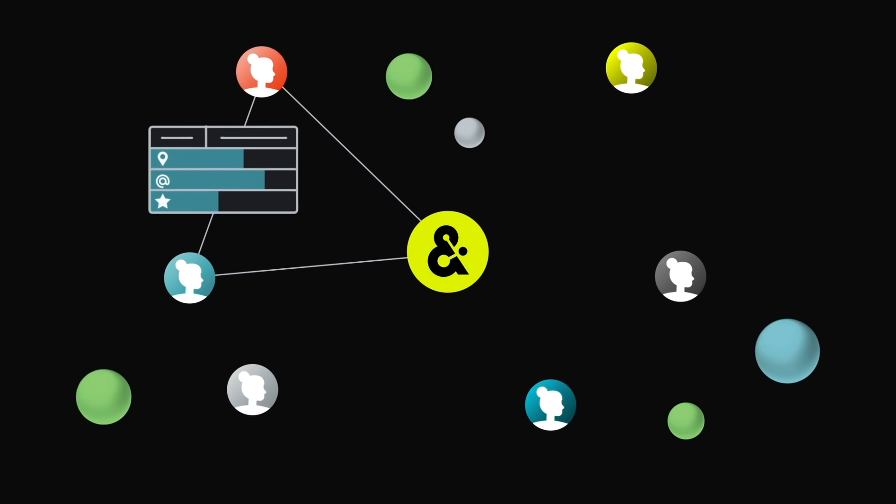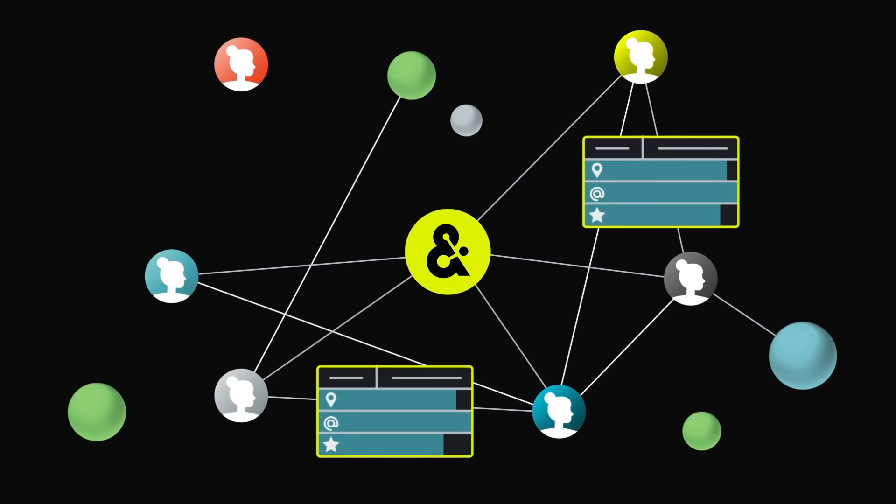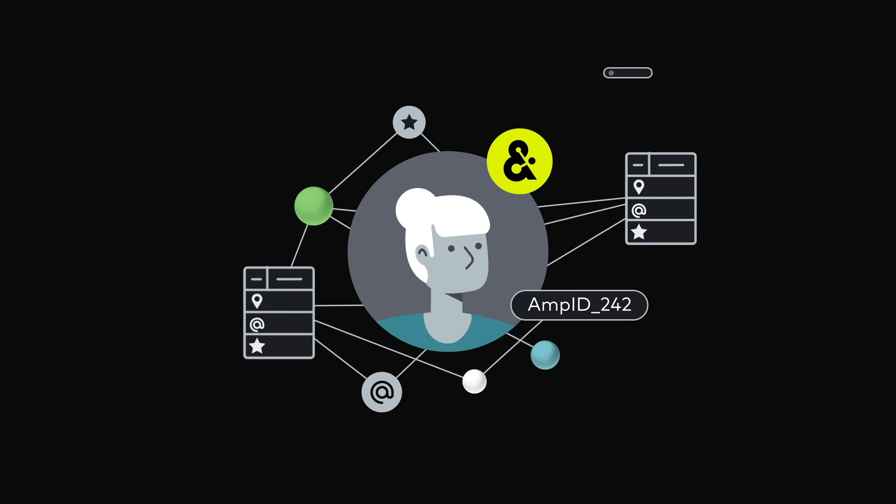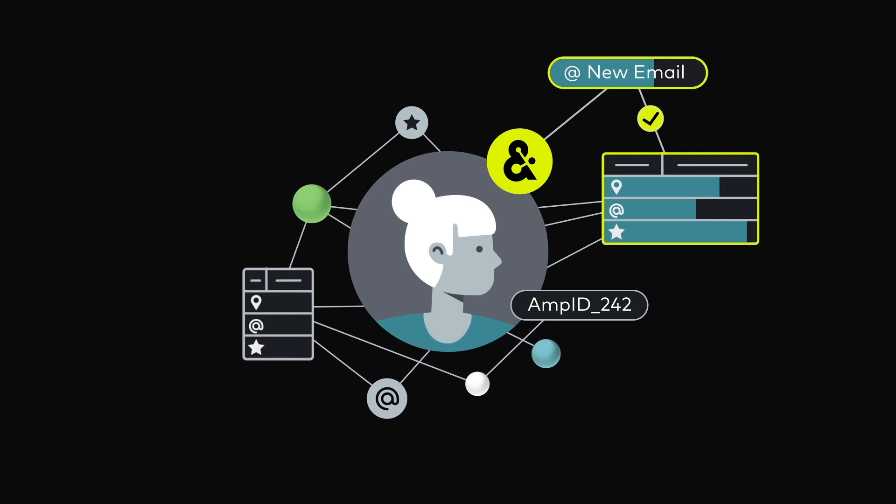We use artificial intelligence to unify records, so instead of six fragmented versions of the same customer, you have one complete record. And because we don't rely on a patchwork of rules, the IDs adapt to changes in customer data over time.